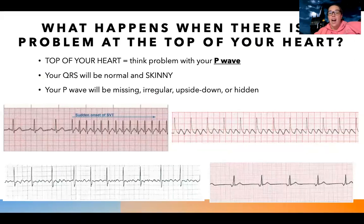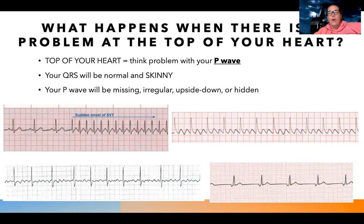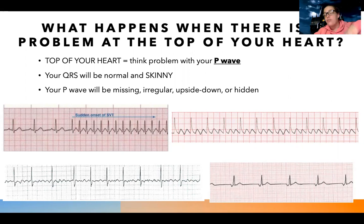When there's a problem with the top of your heart, you have to think back to that EKG introduction PowerPoint where I said each of these little scribbles on paper represents a different part of the cycle of your heart pumping. Your P wave is a sign of your atria, or the top of your heart, contracting. So if I'm having a problem with the top of my heart, think there's a problem with my P wave - that's the first thing I'm going to look at.